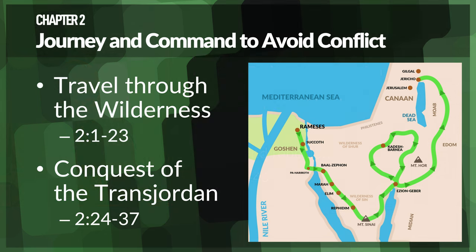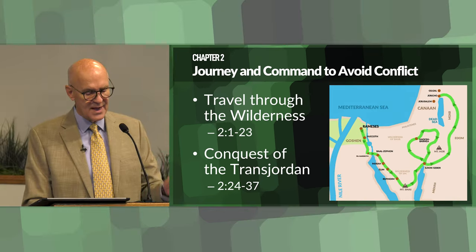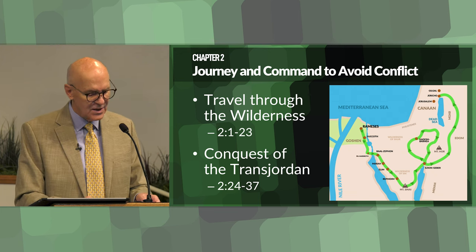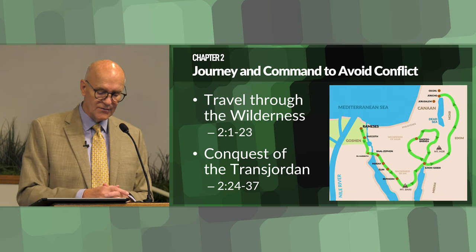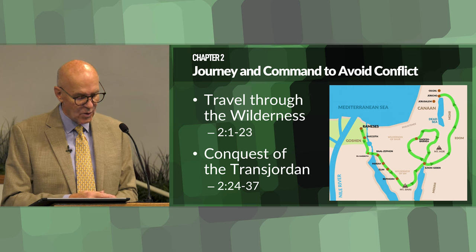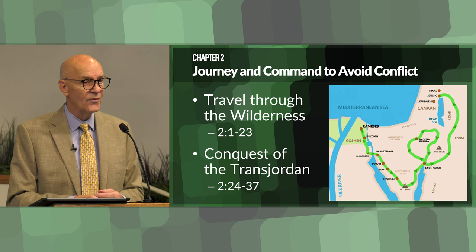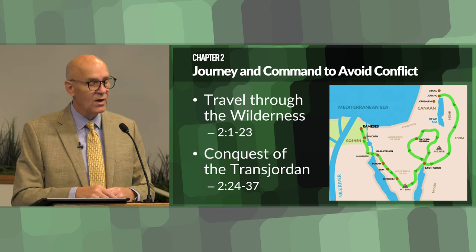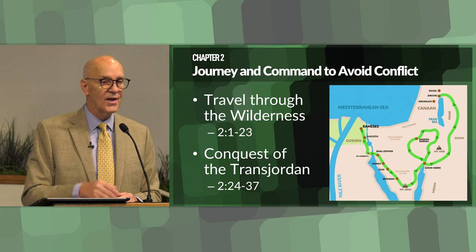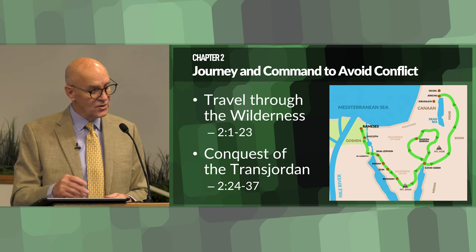In chapter two, the journey and the command to avoid conflict. Deuteronomy 2:1–23: Moses details their travels through the wilderness and instructions to avoid conflict with the Edomites, Moabites, and Ammonites, as these lands were not given to the Israelites by God. This highlights the sovereignty of God in determining the inheritance of nations — God is sovereign not only over what land the Israelites can take, but also over all lands that other nations dwell in, even if they don't recognize Him.